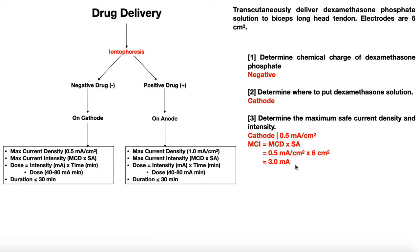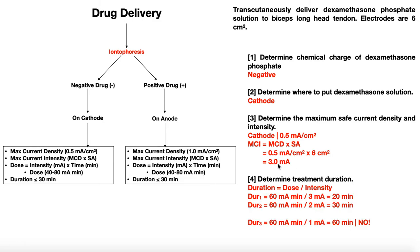Given the maximum safe current intensity is 3 mA, I can use 3 mA or 2 mA, but not 4 mA. For the treatment duration: dose divided by intensity. Using a dose of 60 milliamp-minutes (middle of the 40–80 range) at 3 mA gives 20 minutes. Is this valid? Yes — 3 mA does not exceed the maximum, and 20 minutes is within the 30-minute limit.